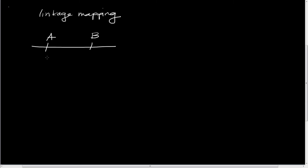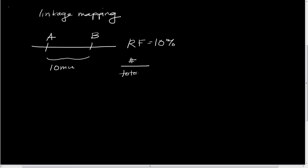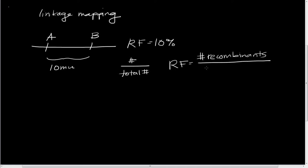So here let's say that we've got Loci A and B and they are 10 map units apart. What this means is that their recombination frequency equals 10%. We know that a frequency is just the number of one class divided by the total number. So the recombination frequency equals our number of recombinants in our progeny divided by our total number of progeny.